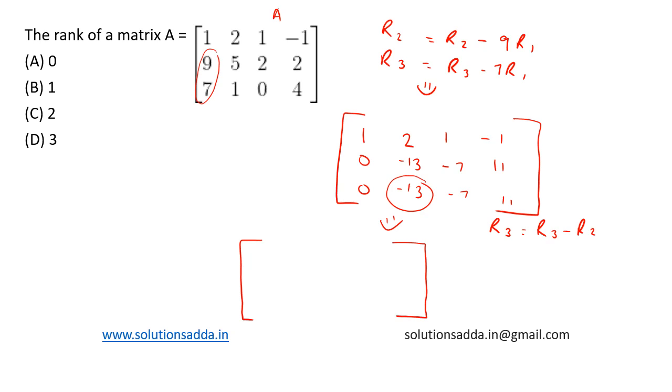Here we are not performing any changes to row 1 or 2, so let's rewrite it directly. 1, 2, 1, minus 1; 0, minus 13, minus 7, 11; and the third row will be 0, 0, 0, 0. So this is the final matrix.